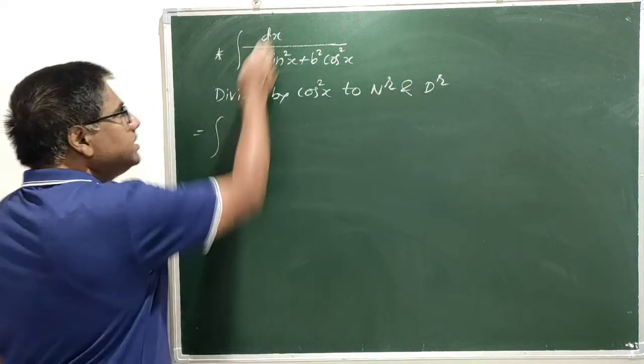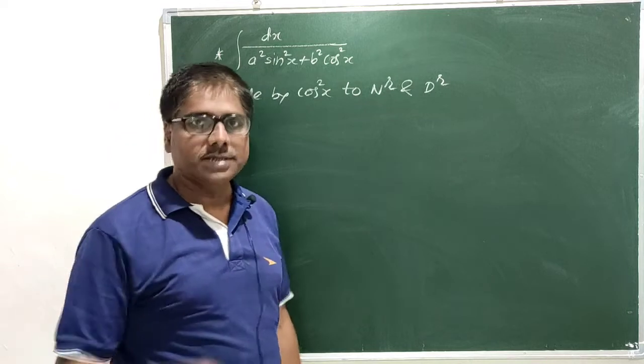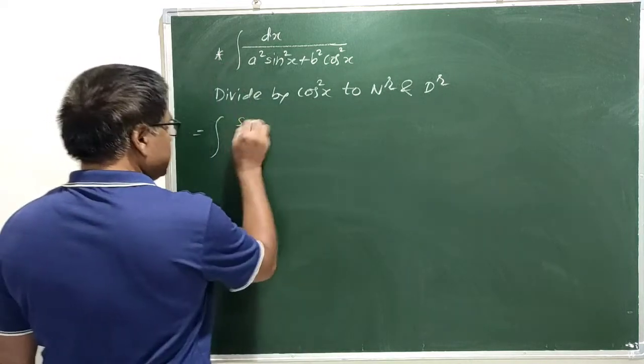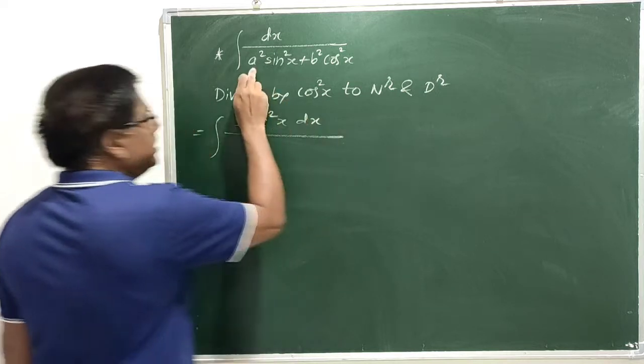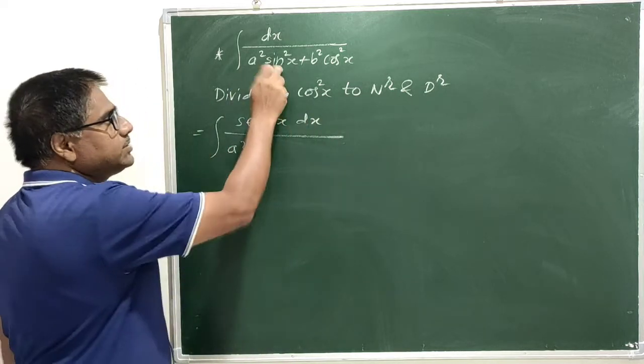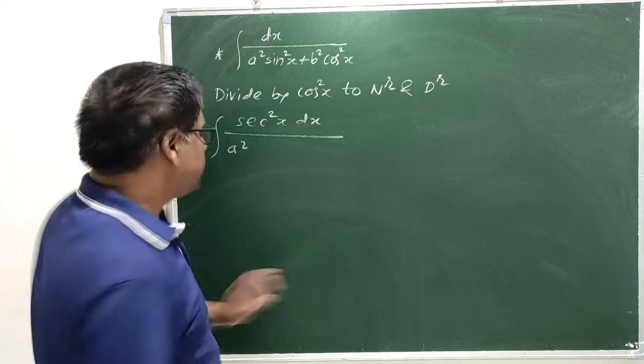The problem becomes 1 upon cos square x is sec square x. Sec square x dx upon a square into sin square x by cos square x is tan square x.